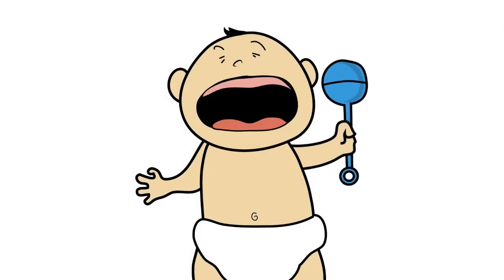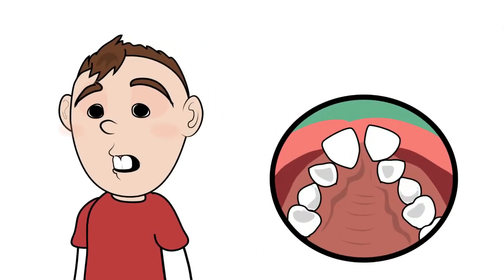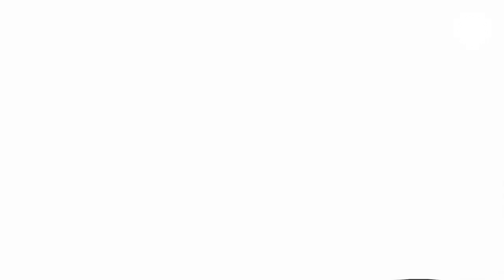Furthermore, incorrect tongue position is the prime cause of crooked teeth, narrow faces, poor sleep, bed wetting, poor concentration and behavioural issues.